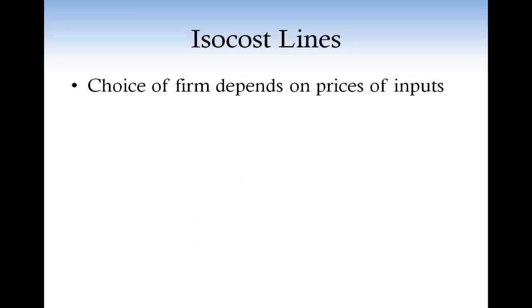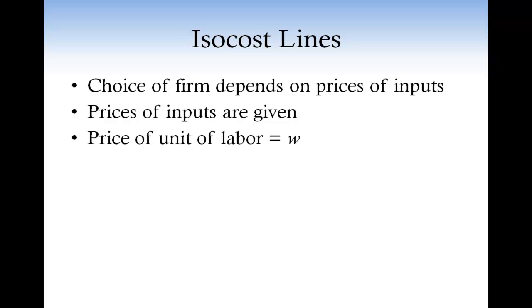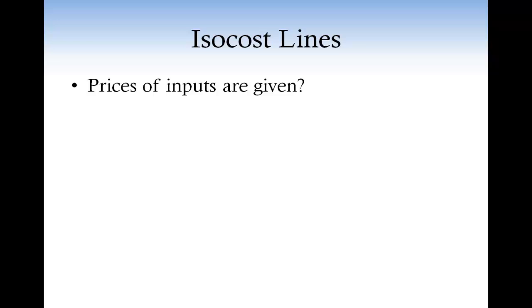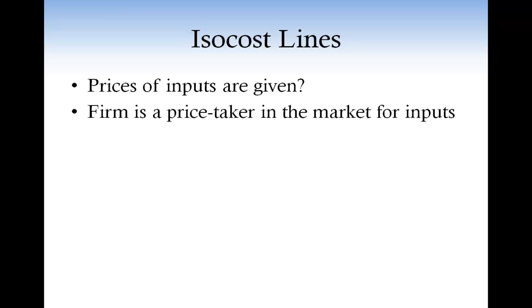The choice of the firm depends on the price of the inputs. We assume that the prices of the inputs are given. We call W the price of one unit of labor and R the price of one unit of capital. This means that the firm has no control over these prices — the firm takes these prices as given when deciding which combination of inputs to buy. That is, the firm is a price taker in the markets for inputs.